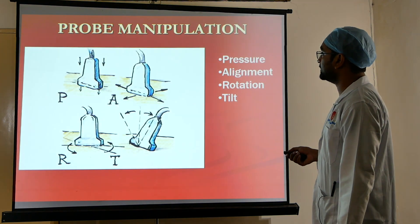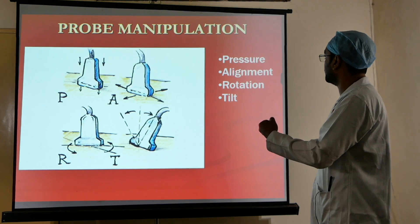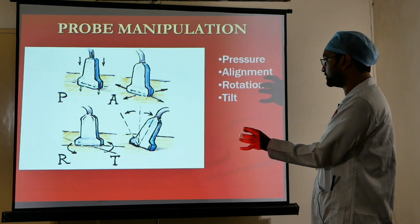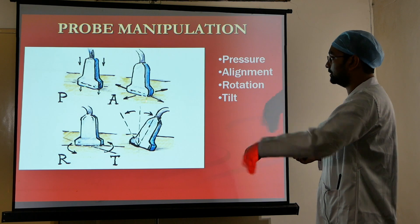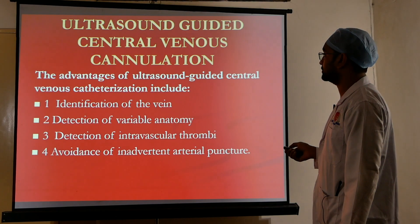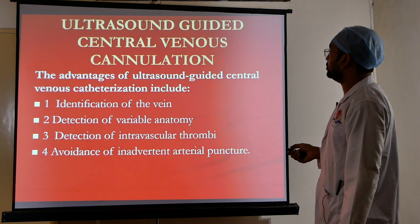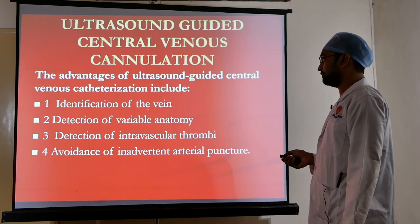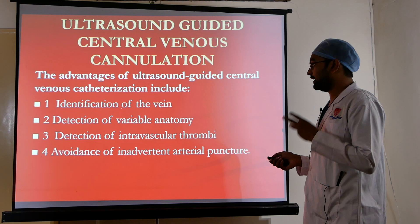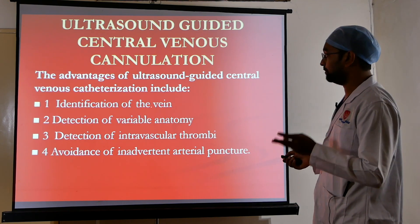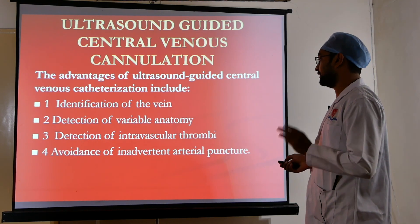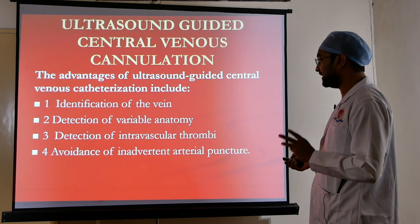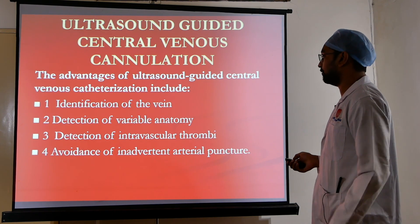Probe manipulation can be done by four methods: applying pressure, alignment, rotation of the whole probe, and tilting. For ultrasound-guided central venous cannulation, advantages include easy identification of the vein, detection of variable anatomy, detection of intravascular thrombi if present, and avoidance of inadvertent arterial puncture.